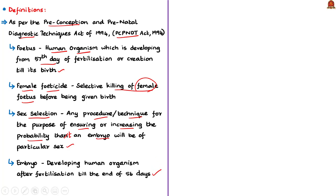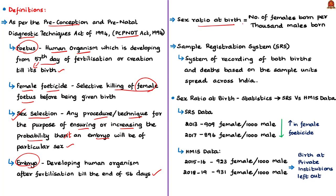Fertilization means the fusion of male and female sex gametes. Till 56 days it is called an embryo, and from the 57th day till birth it is called a fetus. So know the difference between embryo and fetus as defined under this act. If people want only a male child, they will go for sex selection procedures. Sex ratio at birth is defined as the number of females born per 1000 males born. These are key definitions to know before starting this editorial.